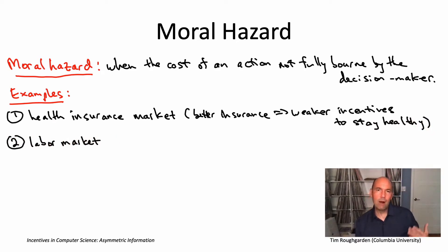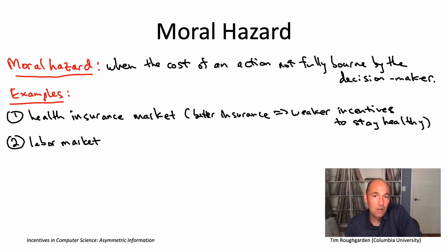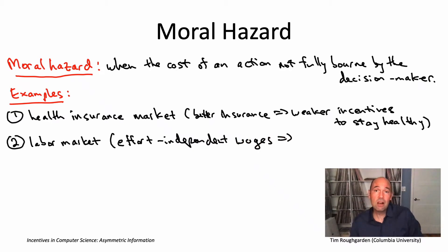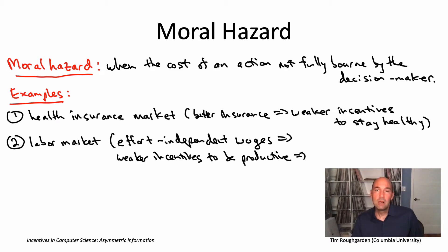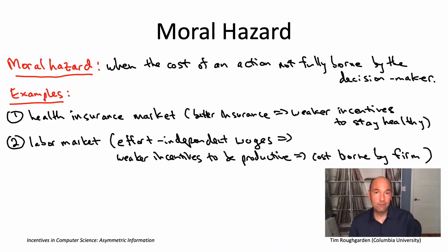Similarly, in the labor market, we were talking about workers as if they were born with a certain productivity level. But of course, you can take actions to make yourself more or less productive, depending on how much effort you exert. If you have a worker at a firm and their effort cannot be directly observed — so if you can't condition the wage of a worker on how much effort they exert — their wage is independent of their effort, and they're not incentivized to exert as much effort as would be good for the firm. So here again, we have asymmetric information where only the worker knows how much effort they're putting in, and the firm deciding the compensation does not. As a result, they're likely to put in less effort, and that causes a cost borne not so much by the individual, but more by the firm. And that's what makes it moral hazard.